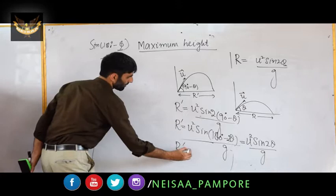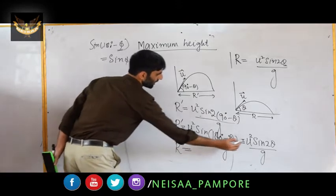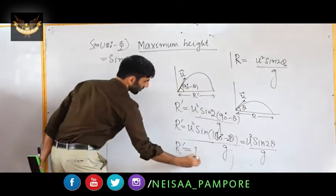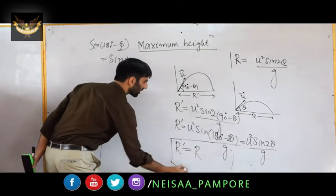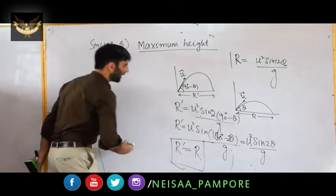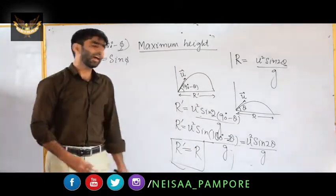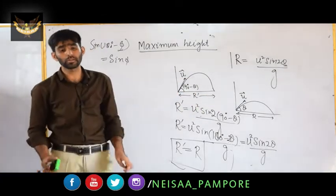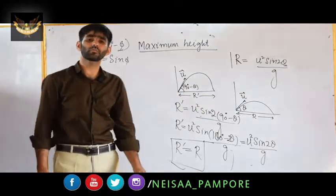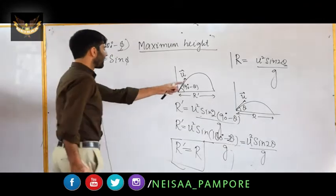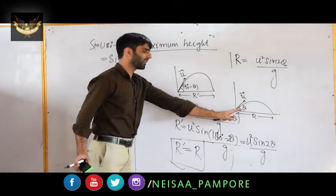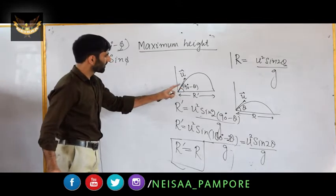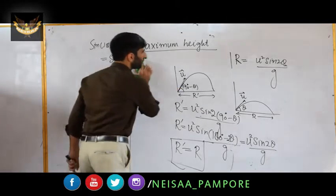So R prime = u² sin(2θ)/g = R. This proves that the range of the projectile is the same at angle θ and at angle 90° minus θ. This is a very important property of horizontal range: the horizontal range is the same at angle θ and at angle 90° − θ.